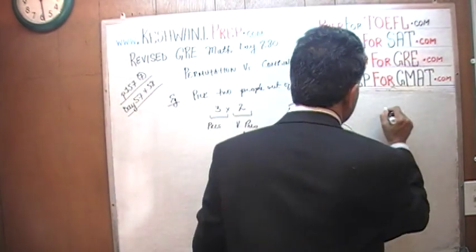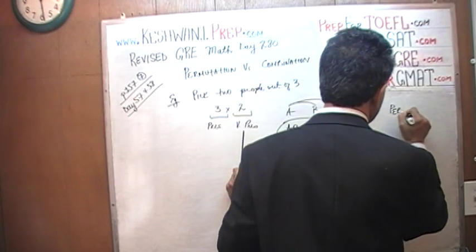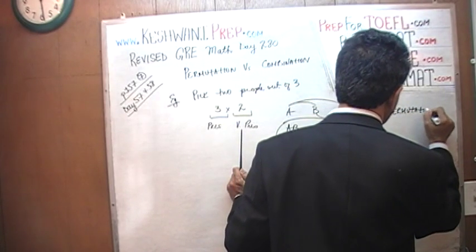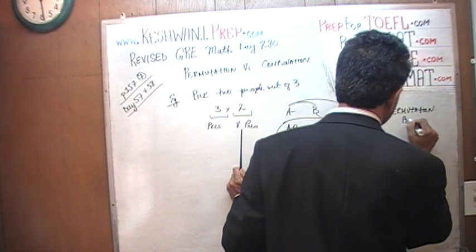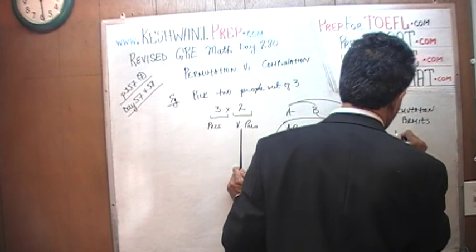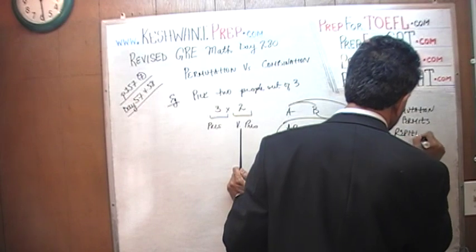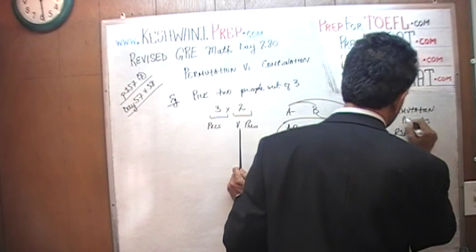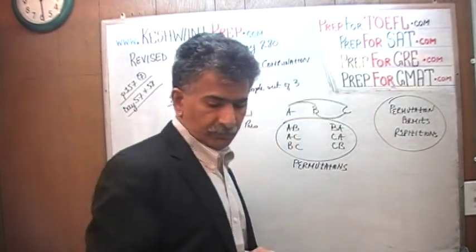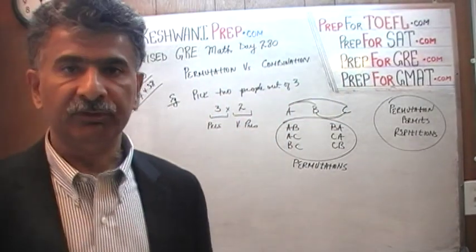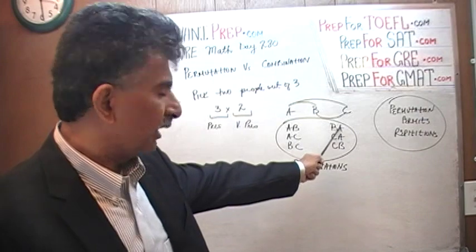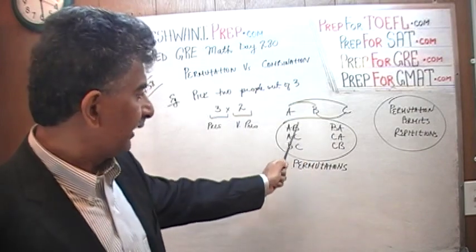Just remember this: permutation permits repetition. That is our mnemonic — a memory device. In permutation, B-A is counted as a different scenario than A-B. What if you are dealing with a situation where order does not matter?